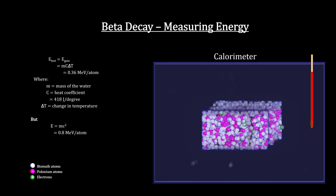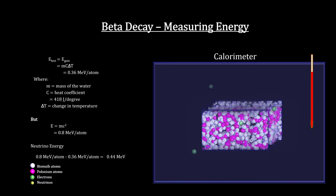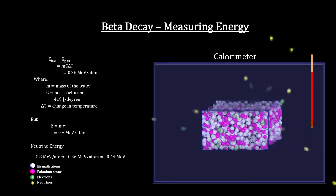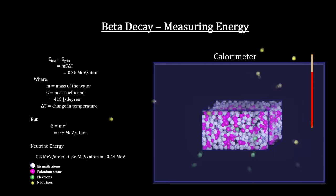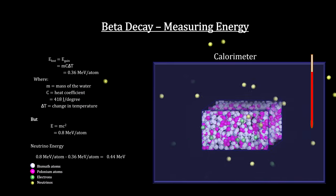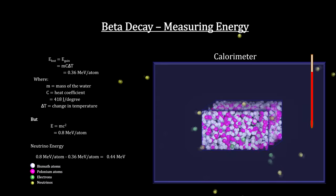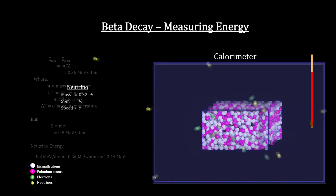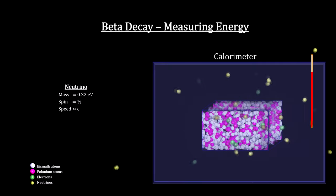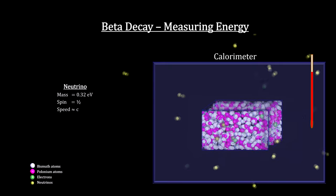Niels Bohr thought that the conservation of energy didn't hold in this case, while Wolfgang Pauli thought that it did and proposed that there must be another particle that doesn't interact much with its surroundings and carried away the missing energy. In 1931, Enrico Fermi named Pauli's particle the neutrino for a small, neutral particle.